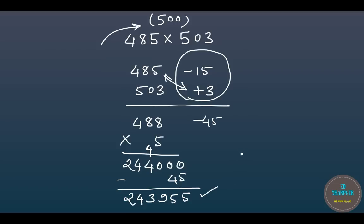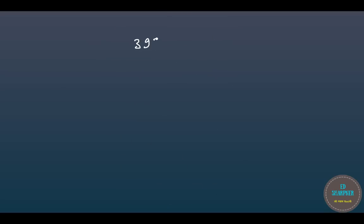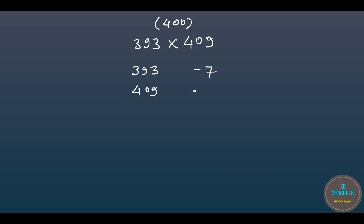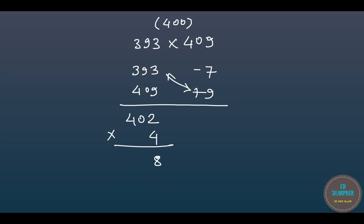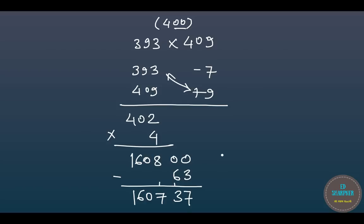Let us try one more: 393 times 409. The base is 400. Write 393 with its deviation and 409 with its deviation. Combining one diagonal pair gives 402. Multiply 402 by 4 to get 1,608. Put two zeros after that to get 160,800, then subtract 63 to get 160,737. That is the answer for this multiplication.